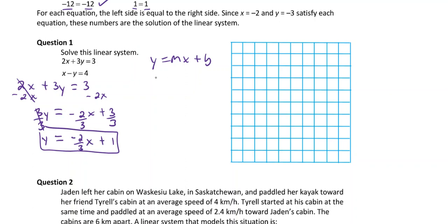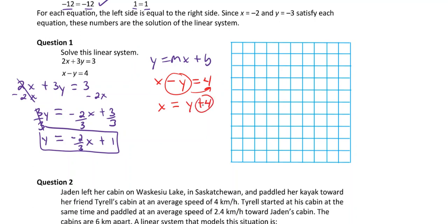For the second equation, x - y = 4: rather than bringing x over and dividing by -1, it's easier to move the -y to the other side so we get x = y + 4, then subtract 4 to get x - 4 = y. So y = x - 4. The slope is 1 over 1, and the y-intercept is -4.